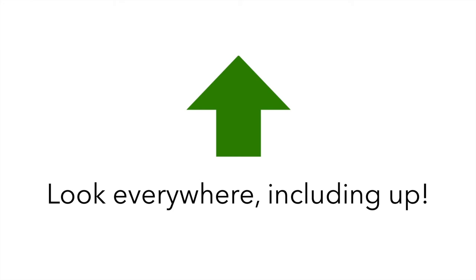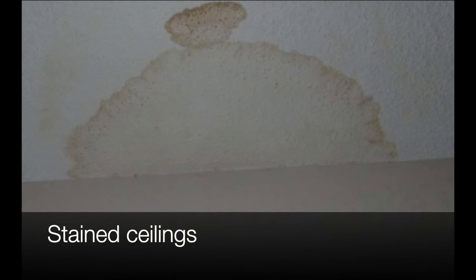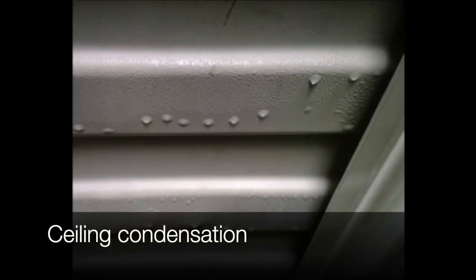Third, remember to keep your eyes open and look everywhere, including up. For example, you could see a ceiling with water stains pointing out that there might be a leak in the roof. Additionally, there could be condensation buildup on the ceiling or on pieces of equipment that can drip onto food product.